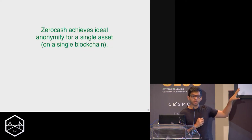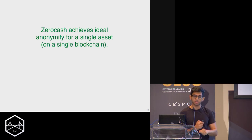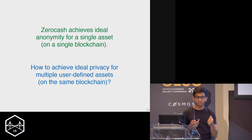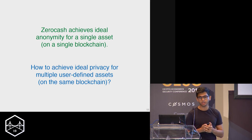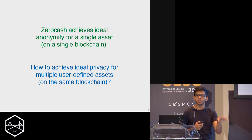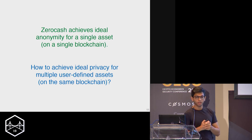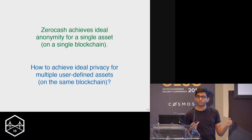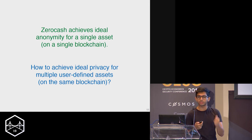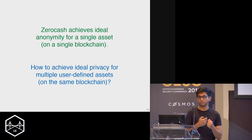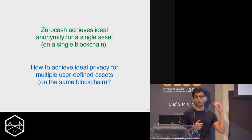Zero cash achieves ideal privacy for a single asset on a single blockchain. Our goal is ideal privacy for multiple assets on the same blockchain. One approach would be to just run the zero cash protocol independently for assets A, B, C — but this partitions your anonymity set. If asset C doesn't have much traffic, whenever you see a transaction for it, you know asset C is being traded. What you ideally want is for nobody to be able to tell whether you're trading A, B, or C, or what values — you want all assets on the chain to share the same anonymity pool.